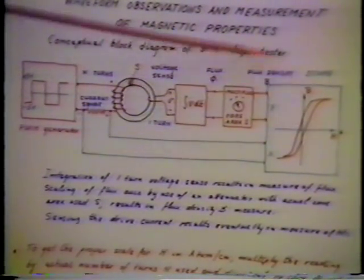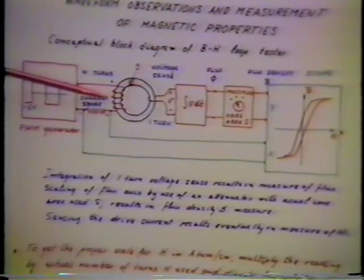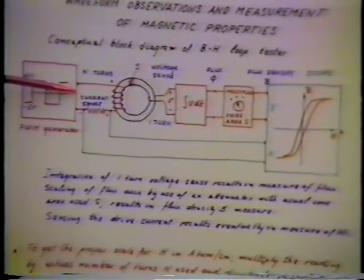Here is a basic circuit diagram of the BH loop tester, where the device under test is a core with a single winding, which is excited with a square wave voltage with a zero average.